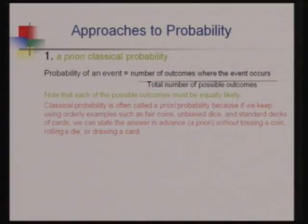Now, how do we calculate probabilities after learning the definitions of events and sample space? There are three main approaches to find out probabilities. The first approach is the classical approach.